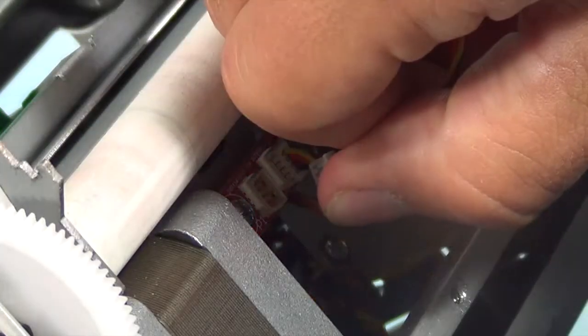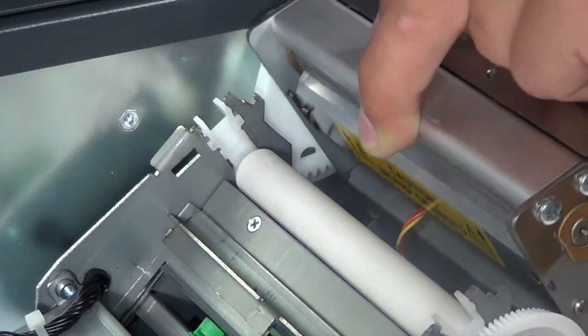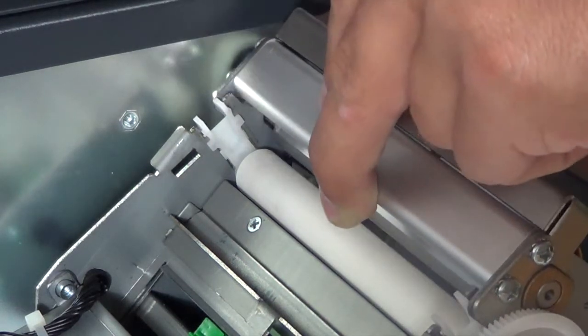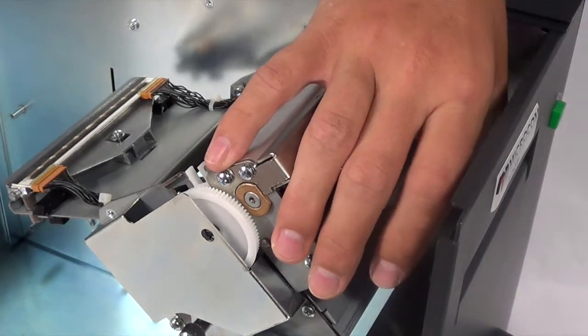Plug the cutter motor cable back into the interface board. Reattach the cutter assembly to the printer, making sure to hook it on the left and right side cutter hooks. Screw the cutter assembly thumb screw back into place.